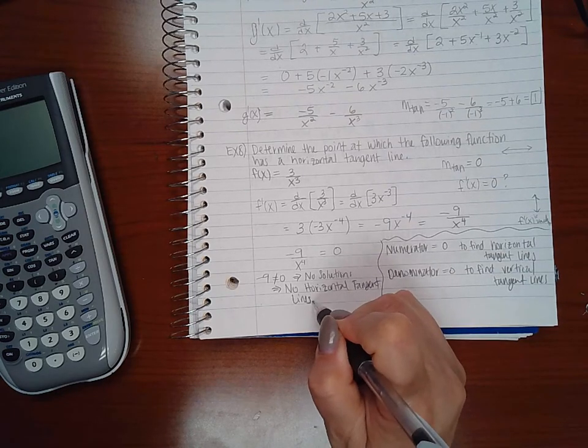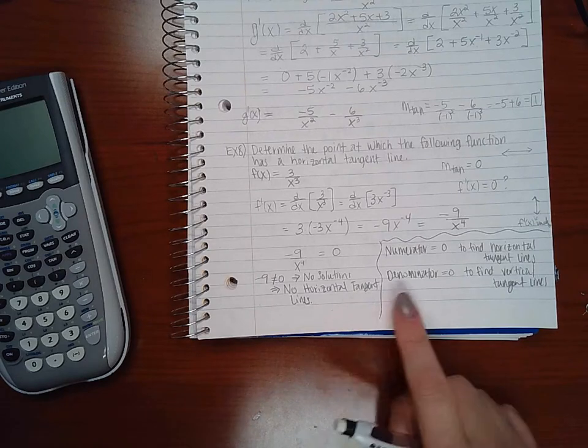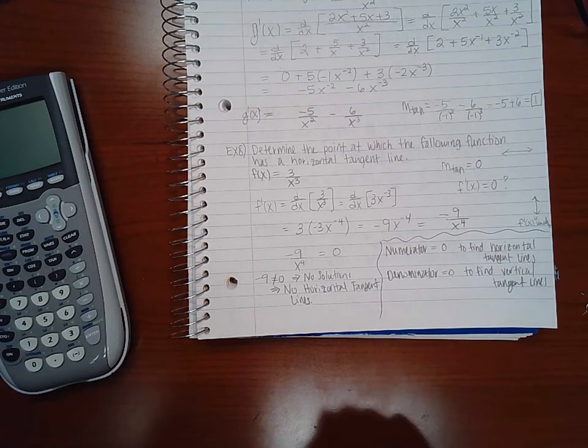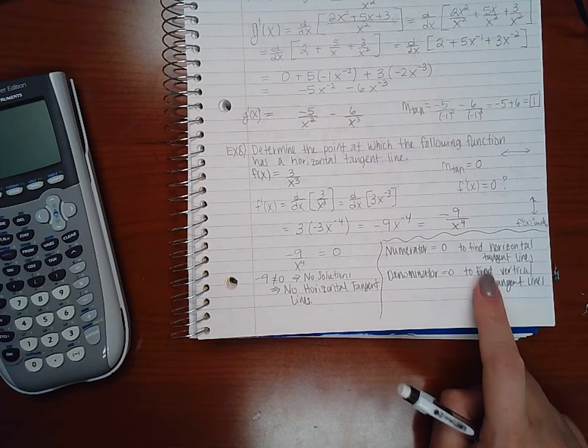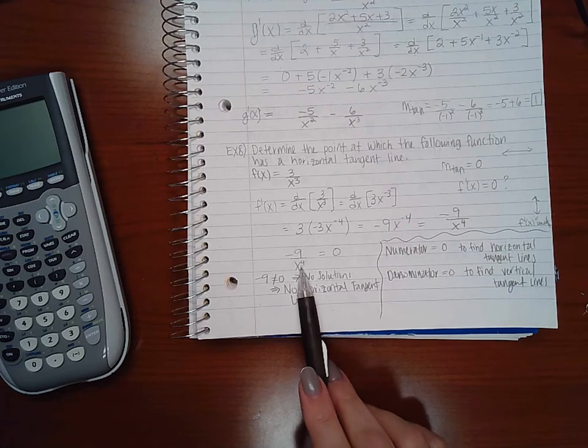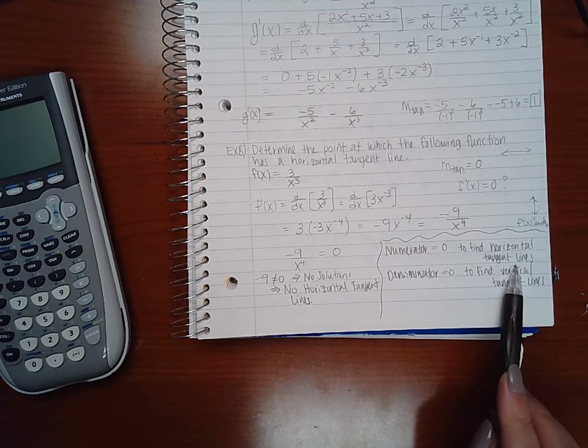Okay, and since the problem did not ask me about vertical tangent lines, I will not be setting my denominator equal to 0. However, if you do get problems in your homework that ask you about both horizontal and vertical tangent lines, just understand that once your derivative is in its fraction form, to find the horizontal tangent lines